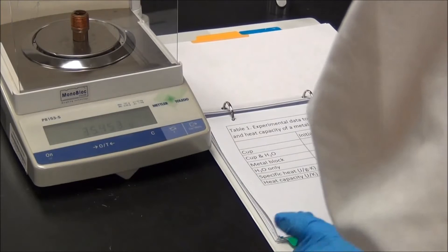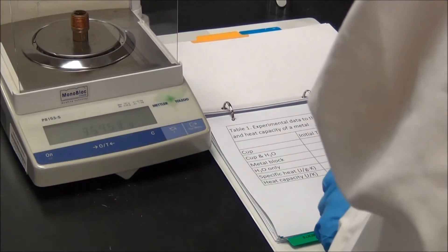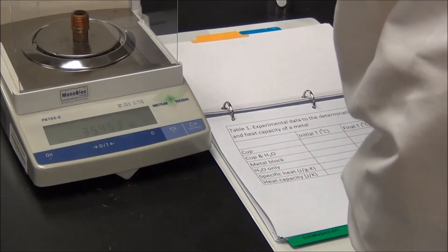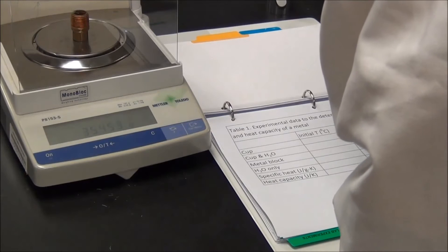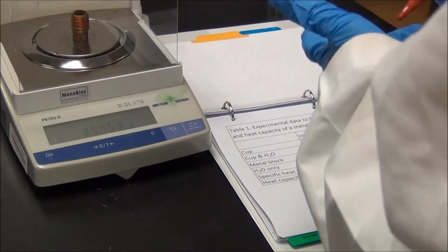And then we should record this data immediately after we get this reading in our notebook, not on a piece of paper. Make sure you write the data in the right place. 35.453 grams for the metal piece.